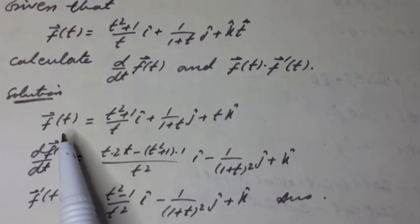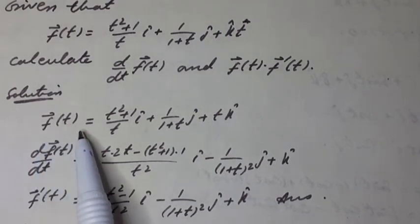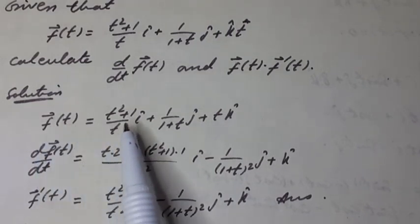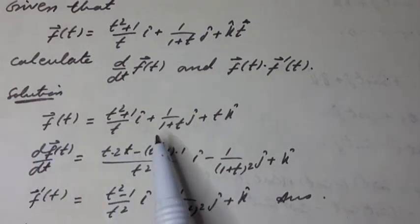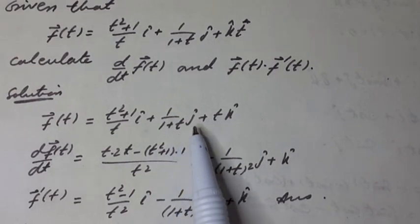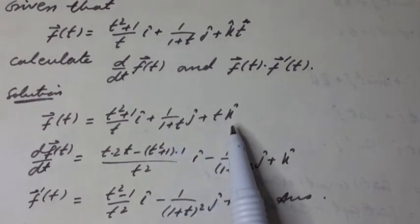Solution. The given vector function of scalar variable is f-vector(t) = (t² + 1)/t i-hat + 1/(1 + t) j-hat + t k-hat.